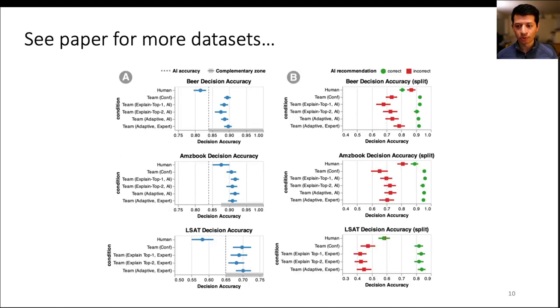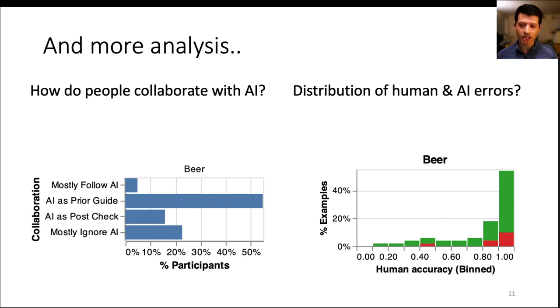Please check out our full paper for more quantitative results on other datasets and qualitative analysis such as how people collaborate with the AI and the differences and distributions of errors and expertise of the humans and AI models.